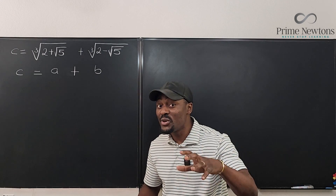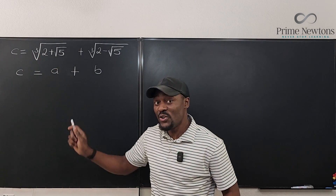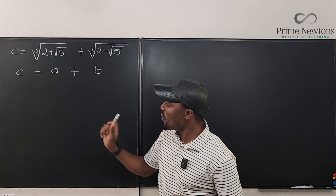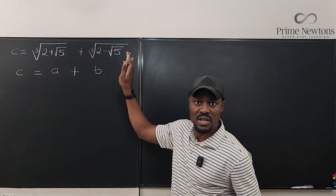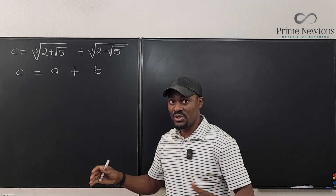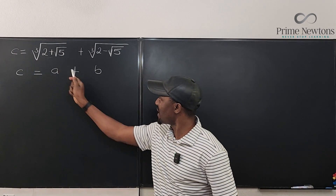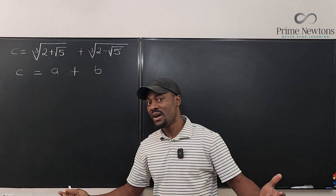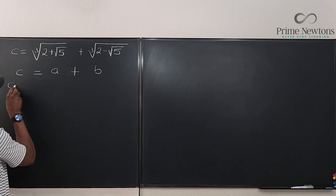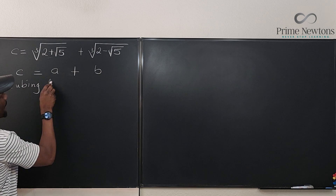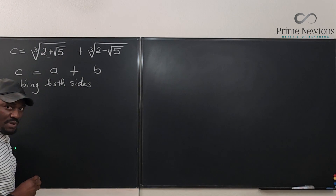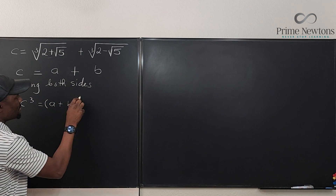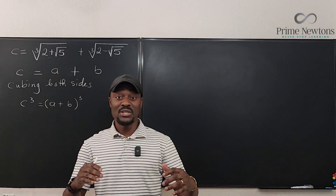The major issue we have is the cube root sign — we don't know the cube roots here because the radicands involve square roots. So we're going to try to get rid of the cube roots. To get rid of cube roots you have to cube, but you can only cube both sides of an equation. So we say: cube both sides, and we get C cubed equals (A plus B) cubed.